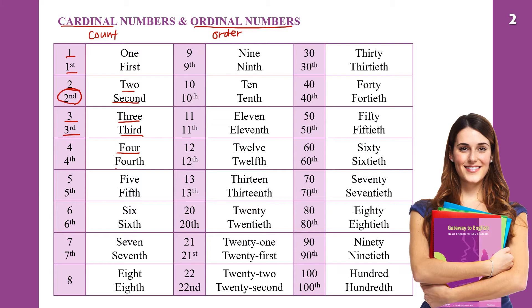Number 4 and 4th. Then 5, 6, 7, 8. Now you can see the TH ending here for 4th, 5th, 6th, 7th, and 8th.